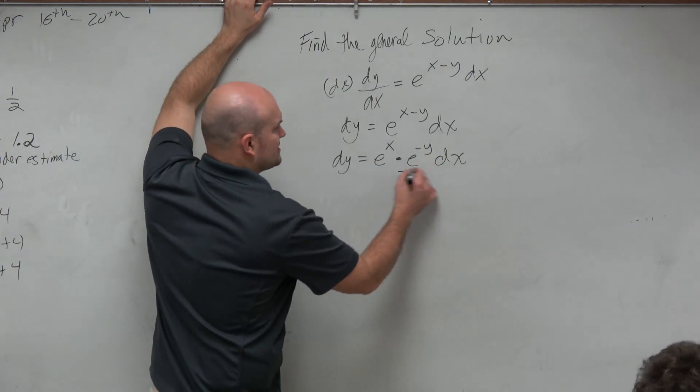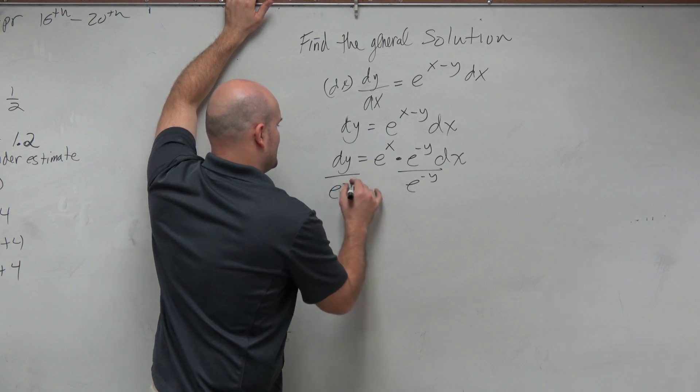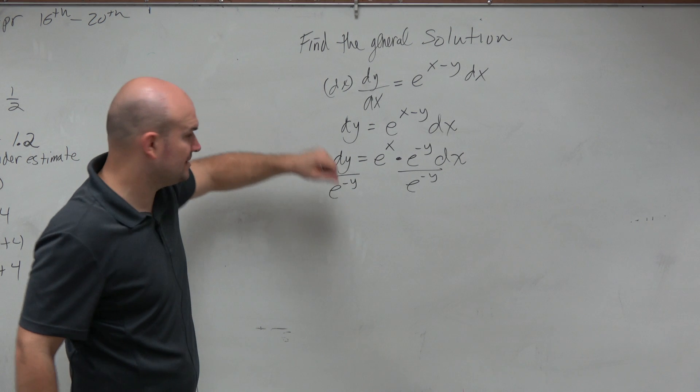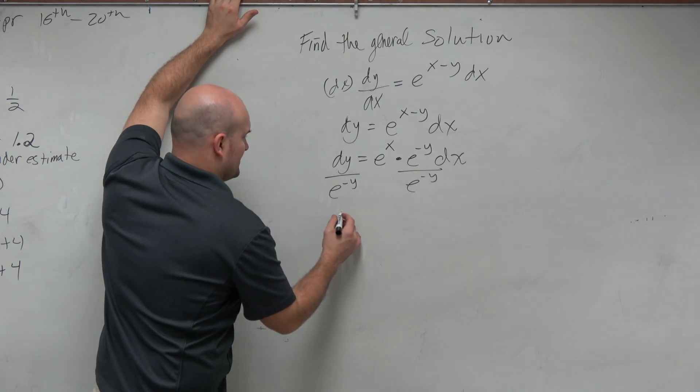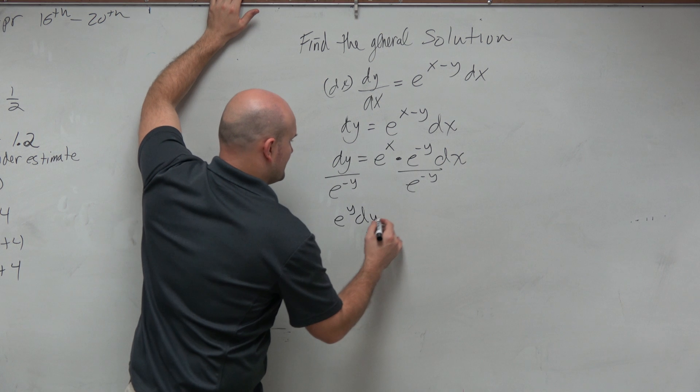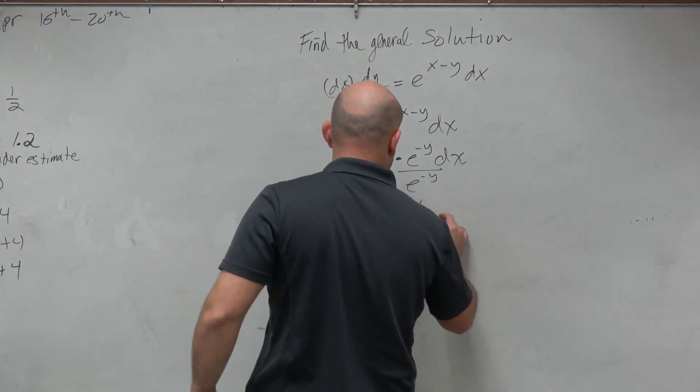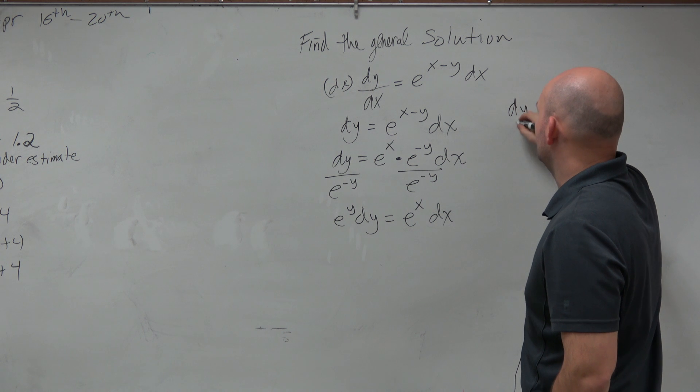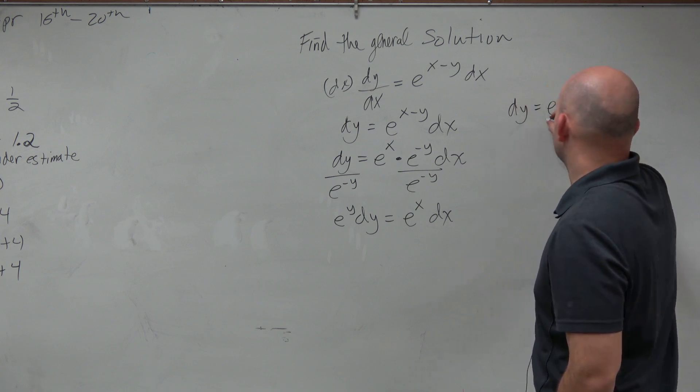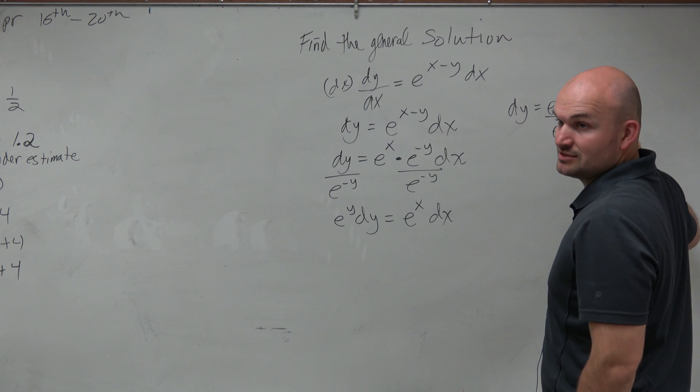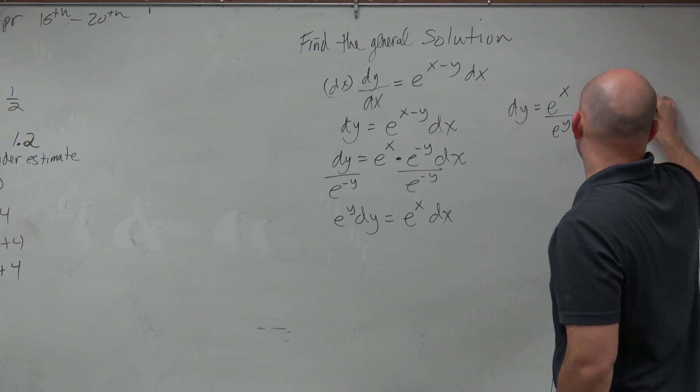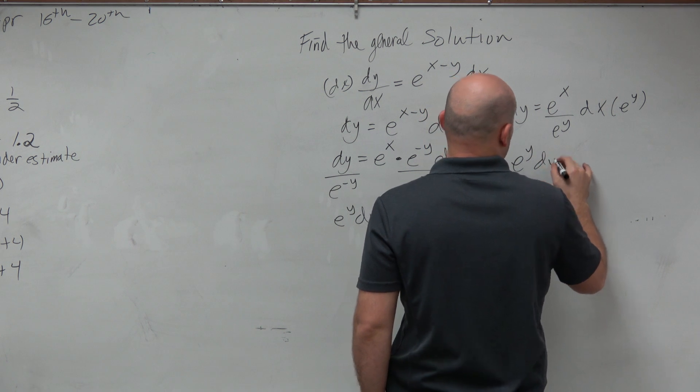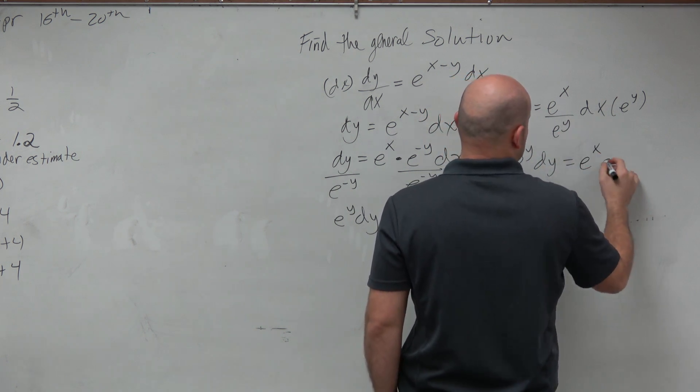And here, to get rid of this, I'm just going to divide by e to the negative y. And if I brought this up, yeah, you'd have the exact same. Because if I brought that up, I'd have e^y dy equals e^x dx. And if you did it divided by, you'd have e^x over e^y dx, right? And then you'd multiply by e^y on both sides. So you'd have e^y dy equals e^x dx.